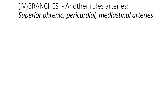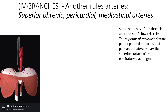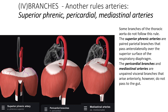Some branches of the thoracic aorta do not follow the main rule. For example, the superior phrenic arteries are paired parietal branches that pass anterolaterally over the superior surface of the respiratory diaphragm. The pericardial branches and mediastinal branches are unpaired visceral branches that arise anteriorly.